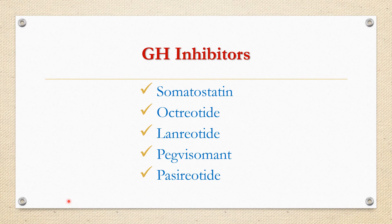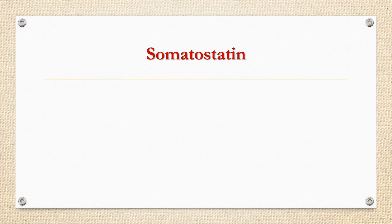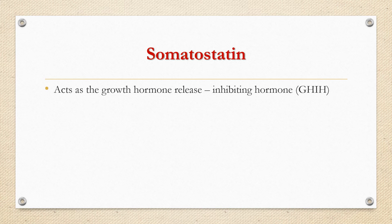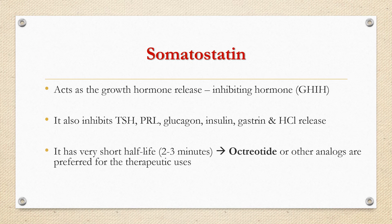Growth hormone inhibitors include somatostatin, octreotide, lanreotide, pegvisomant, and pasireotide. Somatostatin is a physiological endocrine hormone secreted by the hypothalamus, GIT, and delta cells of the pancreas. It acts as growth hormone release inhibiting hormone. It also inhibits the release of TSH, prolactin, glucagon, insulin, gastrin, and acid. It has a very short half-life of just 2-3 minutes; that is why for therapeutic purposes, octreotide or other synthetic analogues of somatostatin are preferred. Adverse effects of somatostatin include steatorrhea, diarrhea, hypochlorhydria, and dyspepsia.